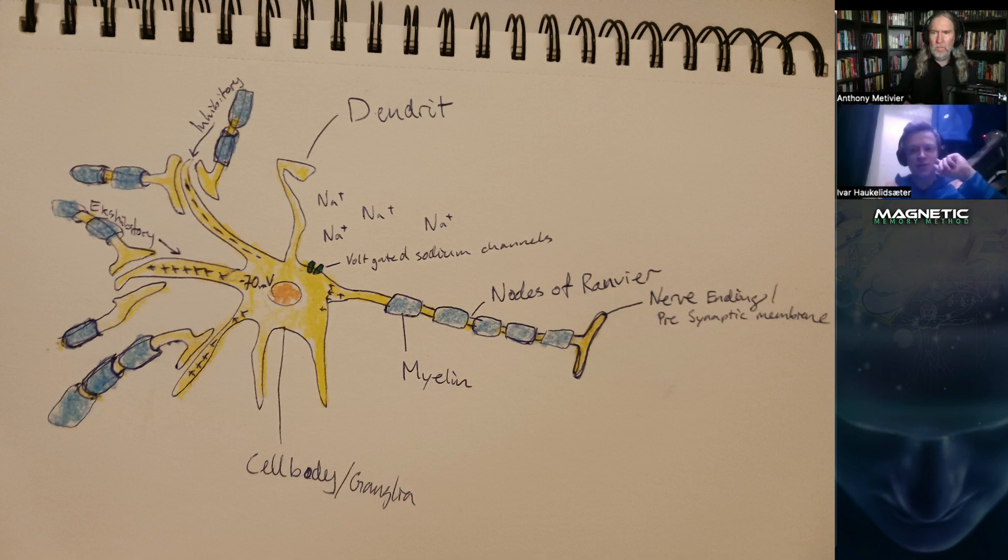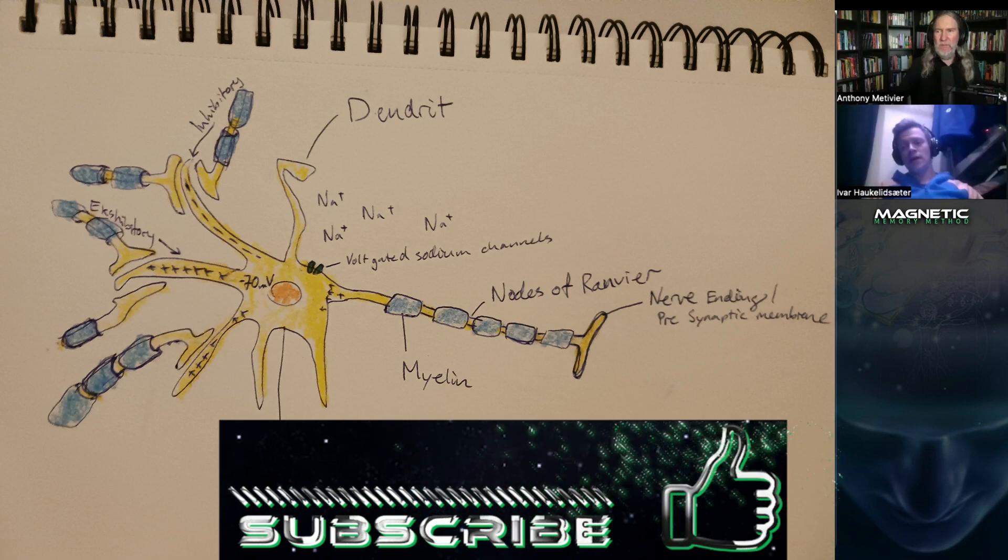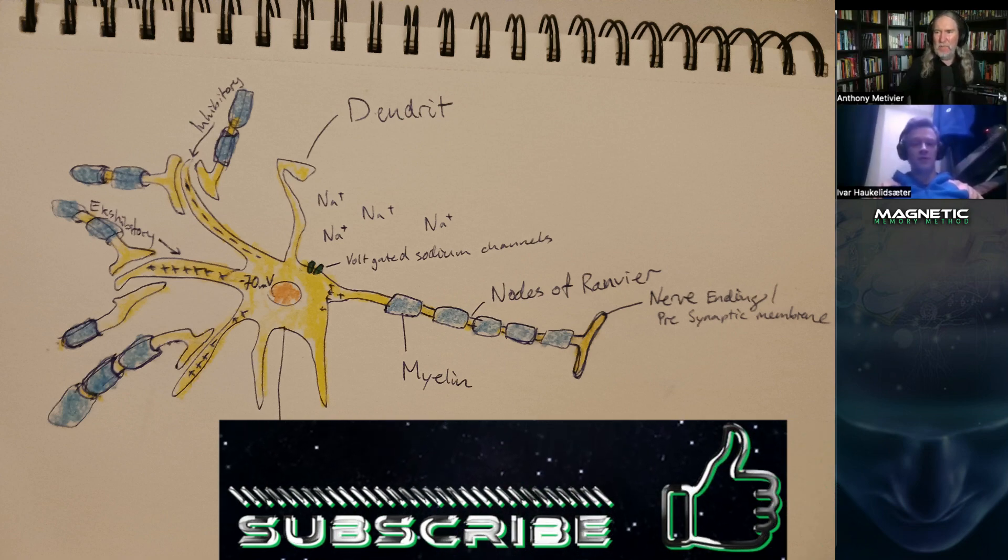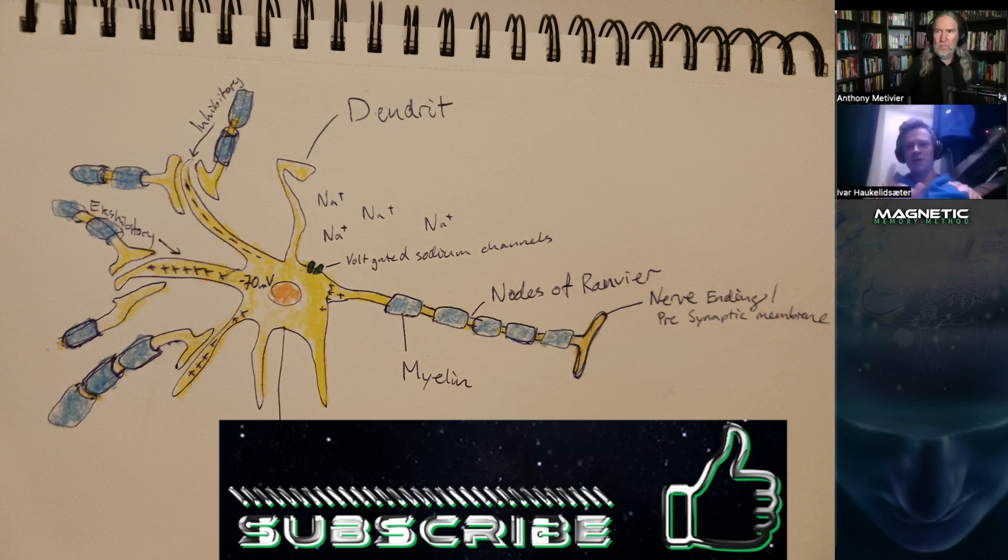There's the action potential, a positive charge. It travels through the long piece covered in myelin, what we call the axon. And it's going to end up in the nerve ending or presynaptic membrane. These nerve cells are really long. These axons might go from your brain all the way down to your spine.